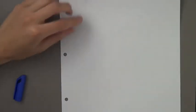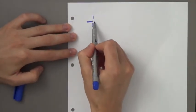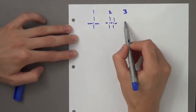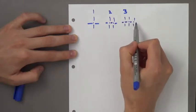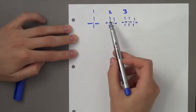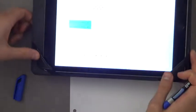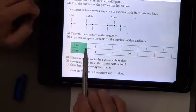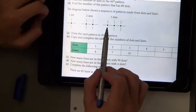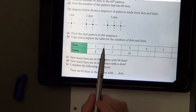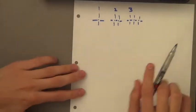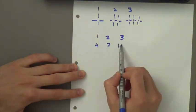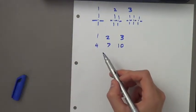Question 2 has patterns where we track the number of dots and corresponding lines. For one dot we have four lines, for two dots we have seven lines, for three dots we have 10 lines — we're adding three each time. So continuing the table: four dots gives 13 lines, five gives 16, and six gives 19 lines.